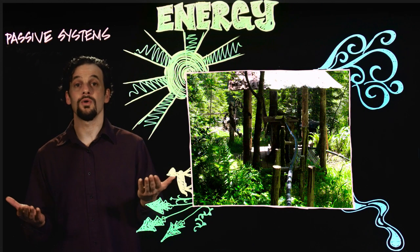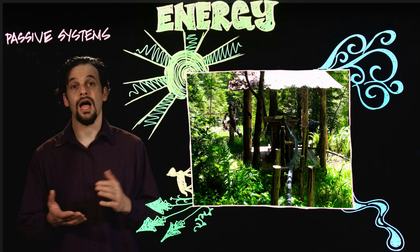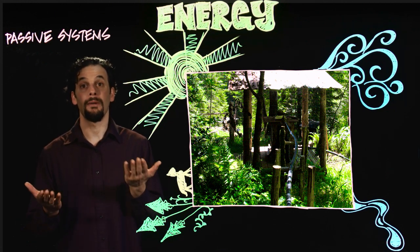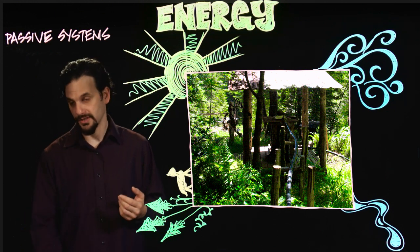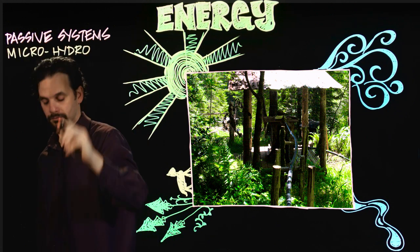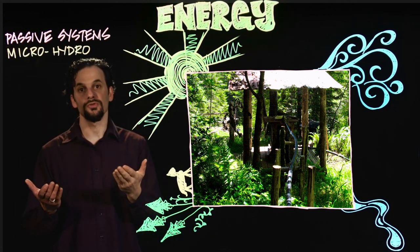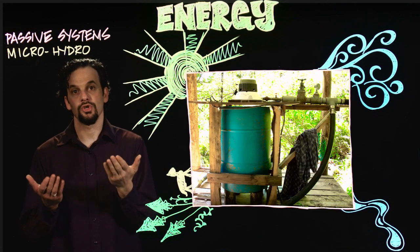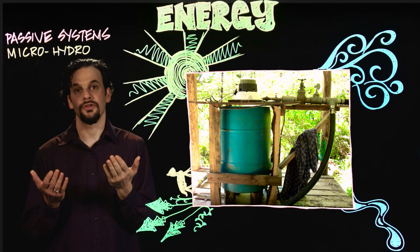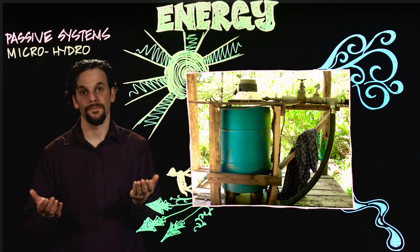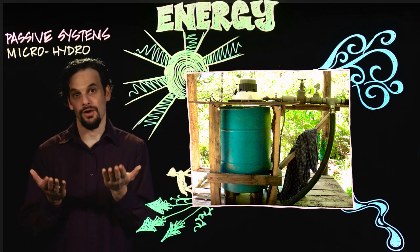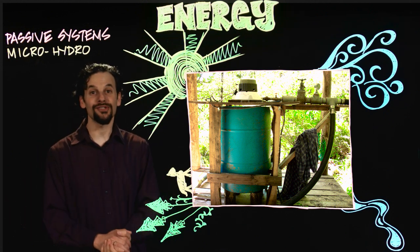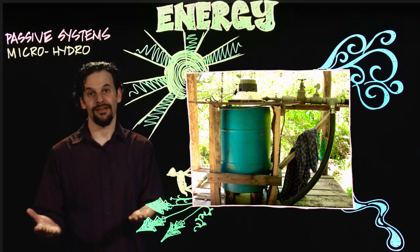Electricity from flowing water is called hydroelectricity, and in permaculture systems we're looking towards micro-hydro systems. This is where energy is produced from a vertical drop of water in a pipe, which creates pressure that can be converted to electricity. An amazing thing about running water is it goes 24 hours a day, 7 days a week.